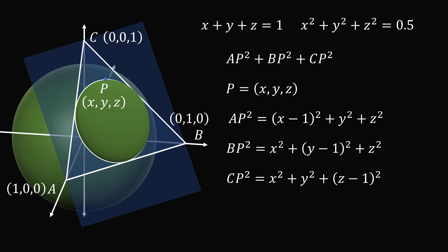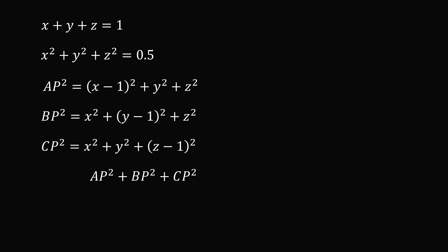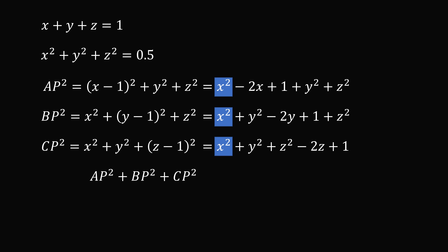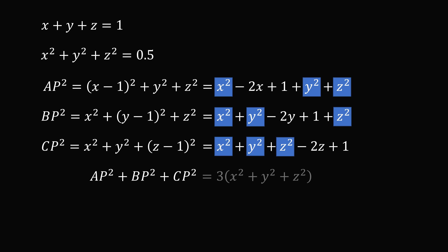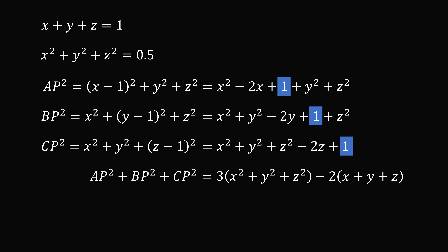Now we want the sum of these, so let's sum them up. We'll first expand each binomial: the square of (X minus 1) in the first equation, the square of (Y minus 1) in the second, and the square of (Z minus 1) in the third. Adding all three equations, we have 3X squared plus 3Y squared plus 3Z squared, which is 3 times (X squared plus Y squared plus Z squared). We also have negative 2X plus negative 2Y plus negative 2Z, which is minus 2 times (X plus Y plus Z). Finally, 1 plus 1 plus 1 equals 3.